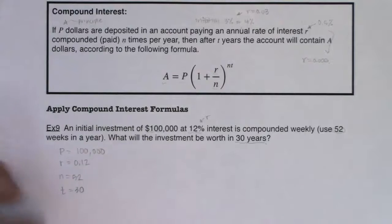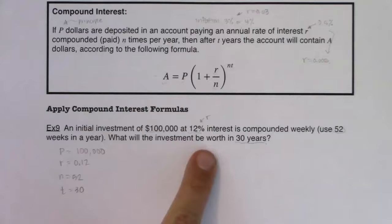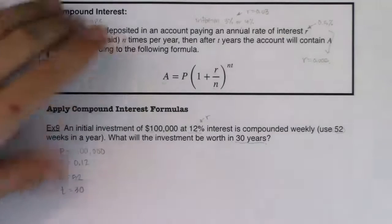So you can see in this problem I flat out gave you P, R, N, and T. And it says what will the investment be worth in 30 years? So what is the ending amount? What is my A value?